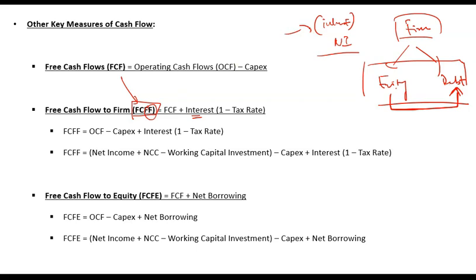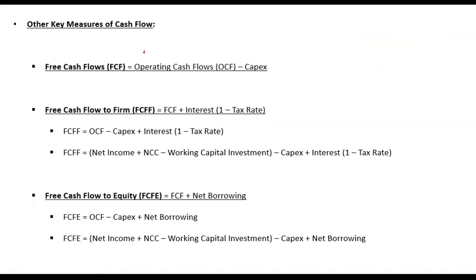To calculate free cash flow to firm, you need to adjust for interest — interest should not be subtracted. But when you calculate net income, you have to subtract interest. So to calculate free cash flow to firm, you need to add back interest, because it is not an outflow for the firm. It is an outflow for equity but an inflow for debt holders — one's outflow is the other's inflow — so on a net level it is not an outflow at the firm level. That's why to calculate FCFF we add back interest.